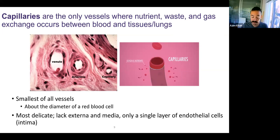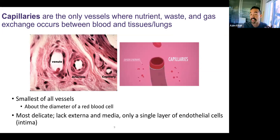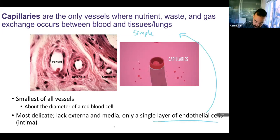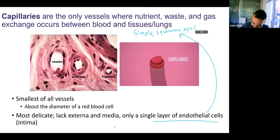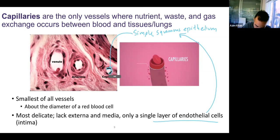Capillaries are the only vessels where nutrient exchange, waste exchange, and gas exchange can happen. In order for exchange to happen across a cell, you need that cell layer to be very thin. The thinnest cell layer that you can possibly have for humans is a simple squamous epithelium. And so you can see the simple squamous epithelium here — single cell layer thick.